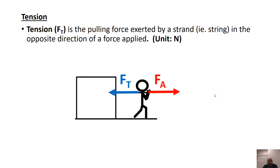Tension is the pulling force exerted by the strand in the opposite direction of the force applied. So if he's pulling on this rope or strand to the right, he's going to create tension in the rope, which will be Ft. The unit on any force is the newton. Any Ft for force tension or Fa for force applied are both going to be in newtons.